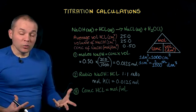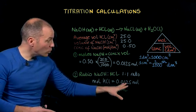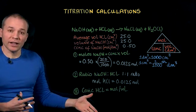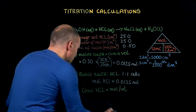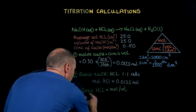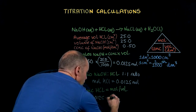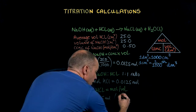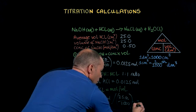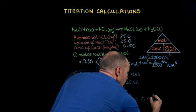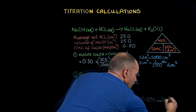Now we're in a position to work out the concentration of the hydrochloric acid. We've got the number of moles and we've got the volume that we used of the hydrochloric acid, and concentration is moles over volume. So that's going to be equal to 0.0125 moles divided by 25.0 over a thousand, and that is equal to 0.50 moles per decimetre cubed.